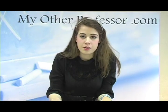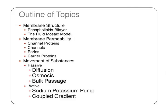Welcome to MyOtherProfessor.com. I'm Zaina and today we're going to discuss biological membranes. Let's take a look at the outline of topics we'll be discussing. First we'll go over the membrane structure, which includes the phospholipid bilayer and the fluid mosaic model. Next we'll take a look at membrane permeability and the different proteins involved. Then we'll look at movement of substances — there are two main types: passive and active.